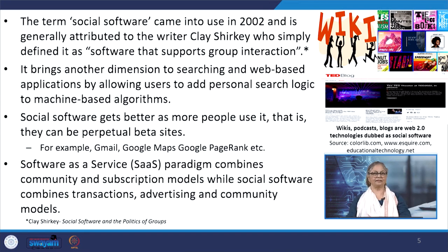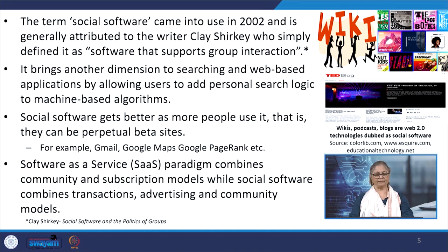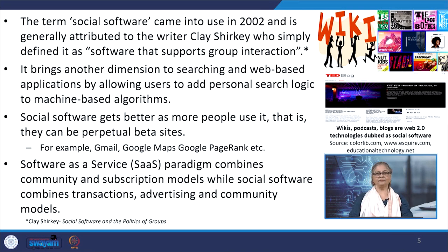Social software gets better as more people use it. The software-as-a-service paradigm combines community and subscription models, while social software combines transactions, advertising, and community models. For example, Discord, a communication platform primarily focused on gaming communities, has been known to operate in a perpetual beta state, regularly introducing new features, improvements, and changes based on user feedback, creating an evolving and dynamic user experience.